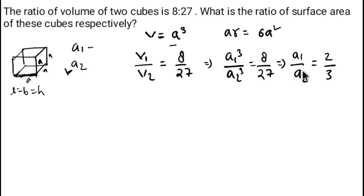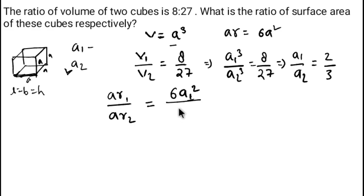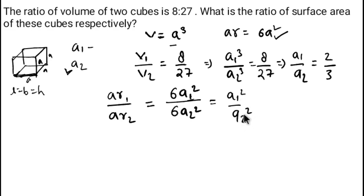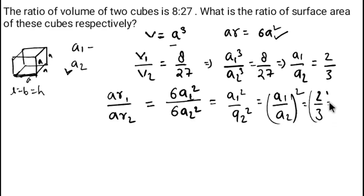Now the question asks for the ratio of surface areas. Area of first cube over area of second cube equals 6a₁² over 6a₂². The 6 cancels, leaving a₁² over a₂², which equals (a₁/a₂)². Since a₁/a₂ = 2/3, we get (2/3)² = 4/9.